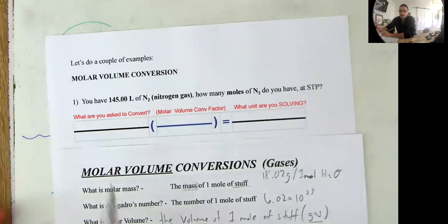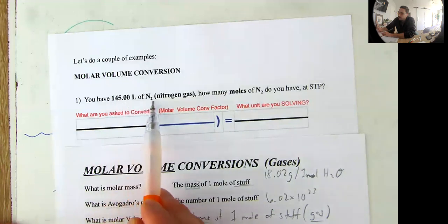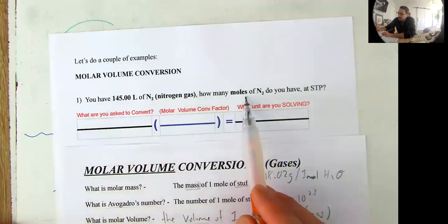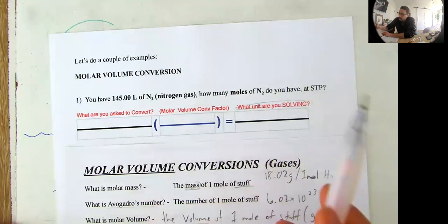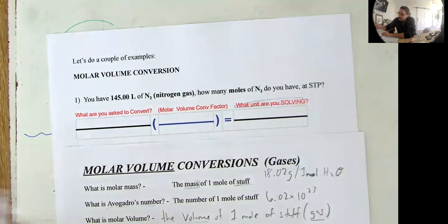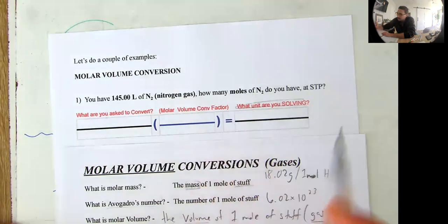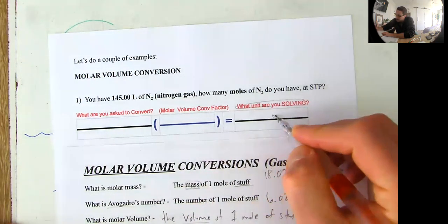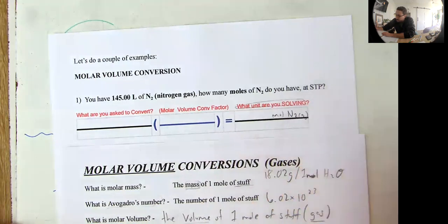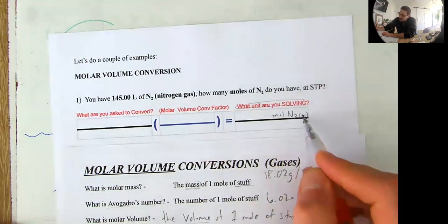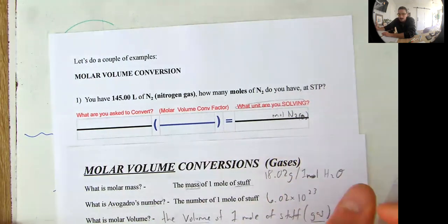So here's our examples. Okay. So the question is asking, you have 145 liters of nitrogen gas. How many moles of N2 do you have at STP? So step one, I do this one first. What unit are you solving for? It's asking how many moles of nitrogen. So I know that I need to be solving for moles of nitrogen. And we know that this is a gas. I'm going to put a little G next to it. That little G in parentheses means gas. It's like a little subscript G.